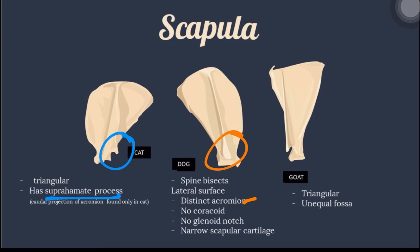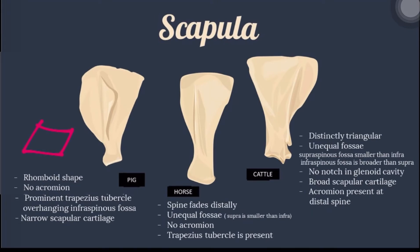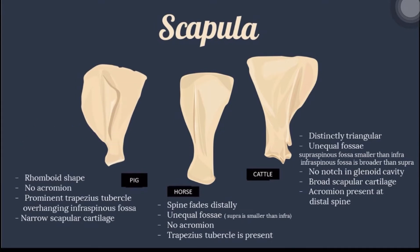In goat, it is triangular in shape and has equal fossa. For the scapula of pig, it is a rhomboid shape, no acromion, and has a prominent trapezius tubercle overhanging the infraspinous fossa, and a narrow scapular cartilage. In horse, the spine fades distally, unequal fossa, no acromion, and the trapezius tubercle is present.